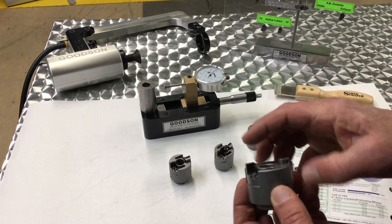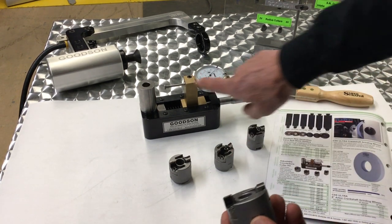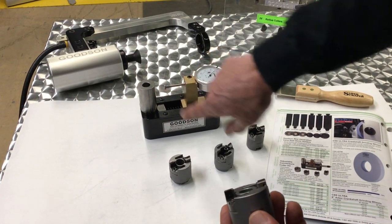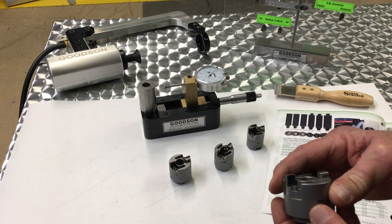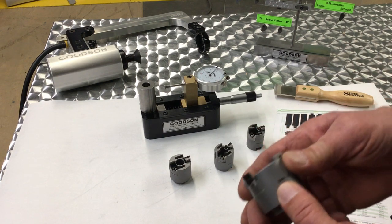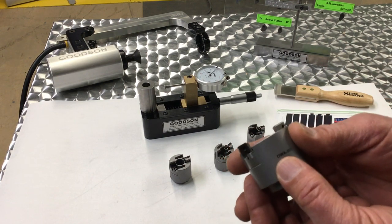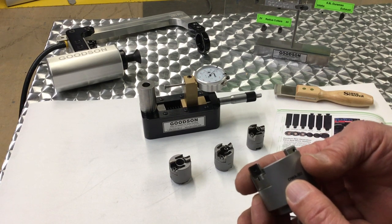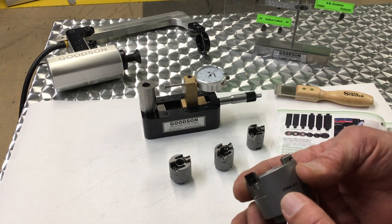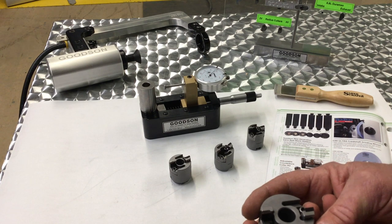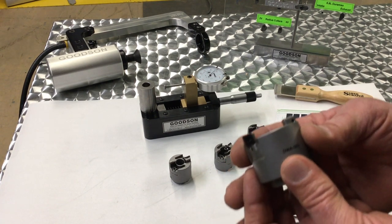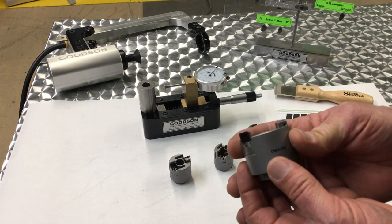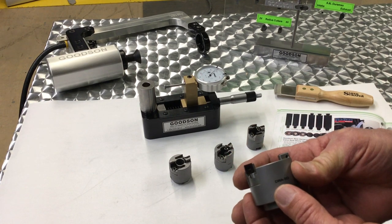Once we get everything set, we've got to hold it in place, because you're going to bore through cast iron, you're going to be counter boring hard steel inserts and aluminum heads. We need to have this thing held in position once we've gone through that meticulous setting process.